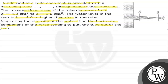So the question is: a side wall of a wide open tank is provided with a narrow tube — a patla tube — through which water flows out. The cross-section area of the tube decreases from 3 cm² to 1 cm². The water level of the tank is 4.6 meters higher than that in the tube.